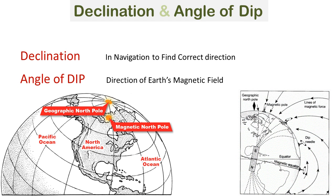Angle of declination is used in navigation to find the correct direction, and angle of dip helps us in finding the direction of earth's magnetic field. I hope you found it useful. Thanks for watching.